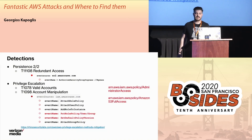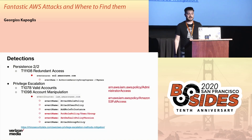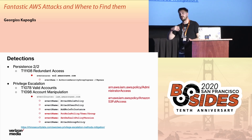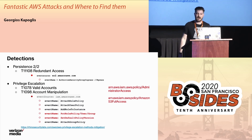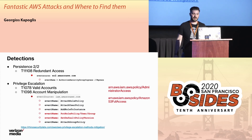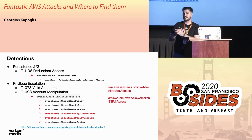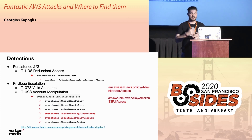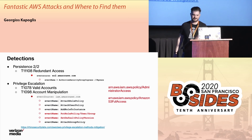Next, for persistence again — someone can make changes to the security group, the ingress or egress. You'd hunt for this by looking for event source EC2 and event name AuthorizeSecurityGroupIngress.